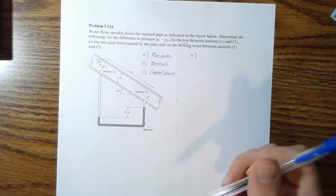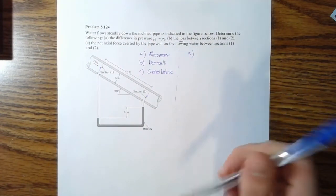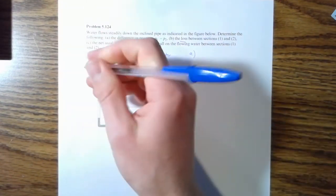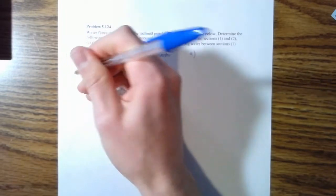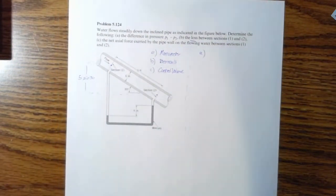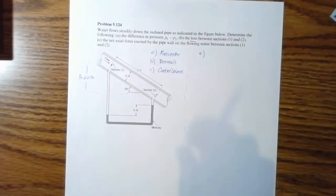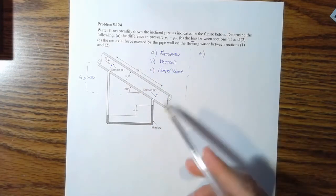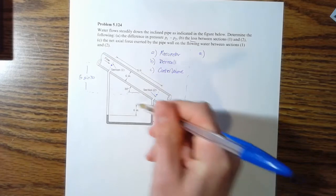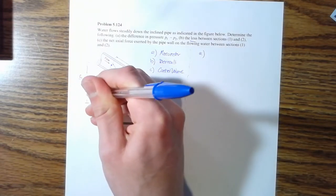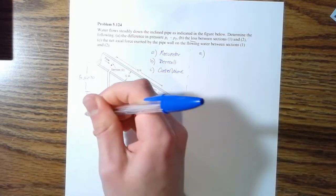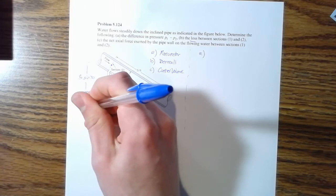And so we're going to define the heights that we have going on here. So between this point and this point, our height is going to be five times sine of 30. Let's see if I can't get that to focus a little better. All right. So five times sine of 30 here, right, because we have this angle here and a distance given there between this point and this point.